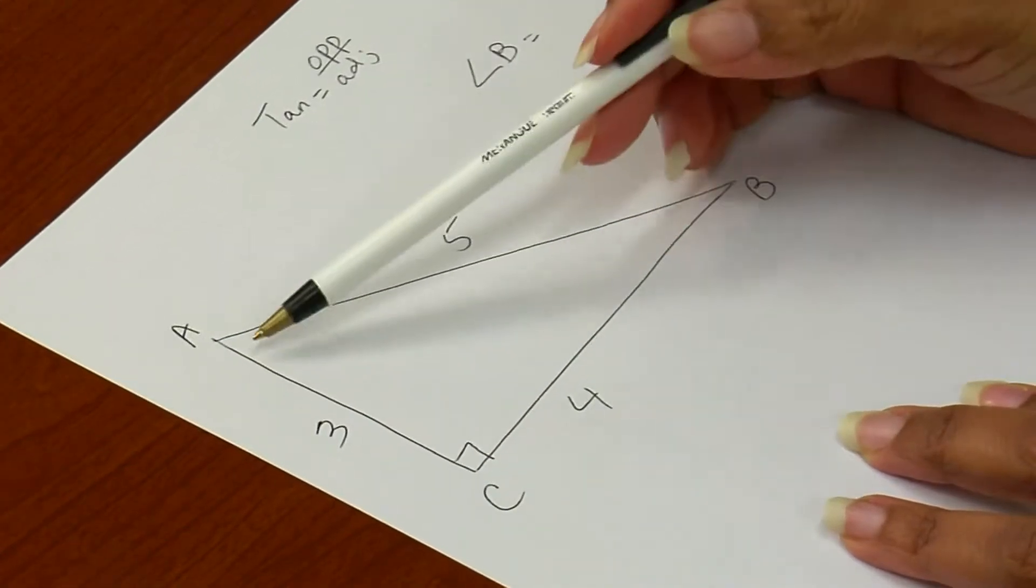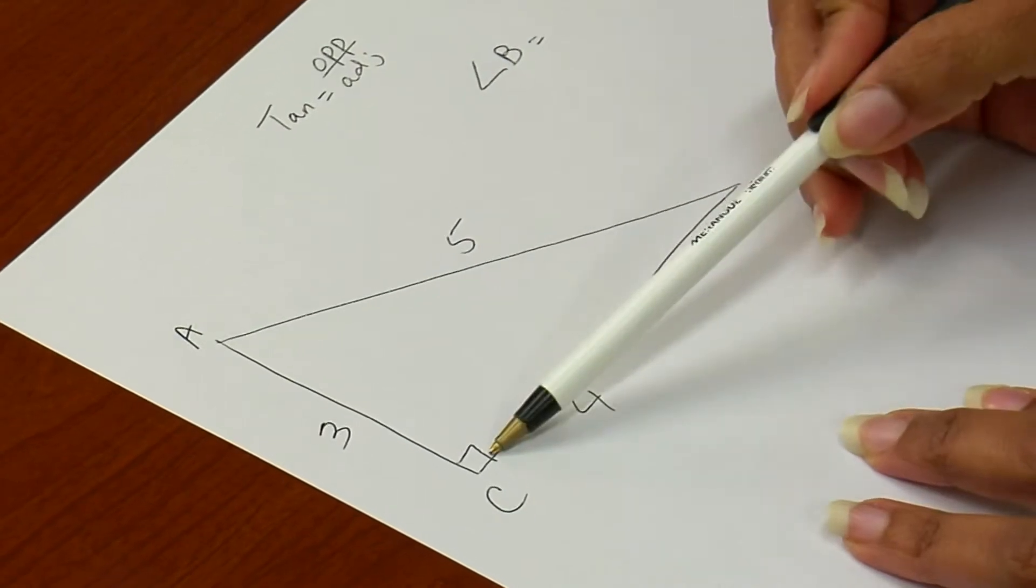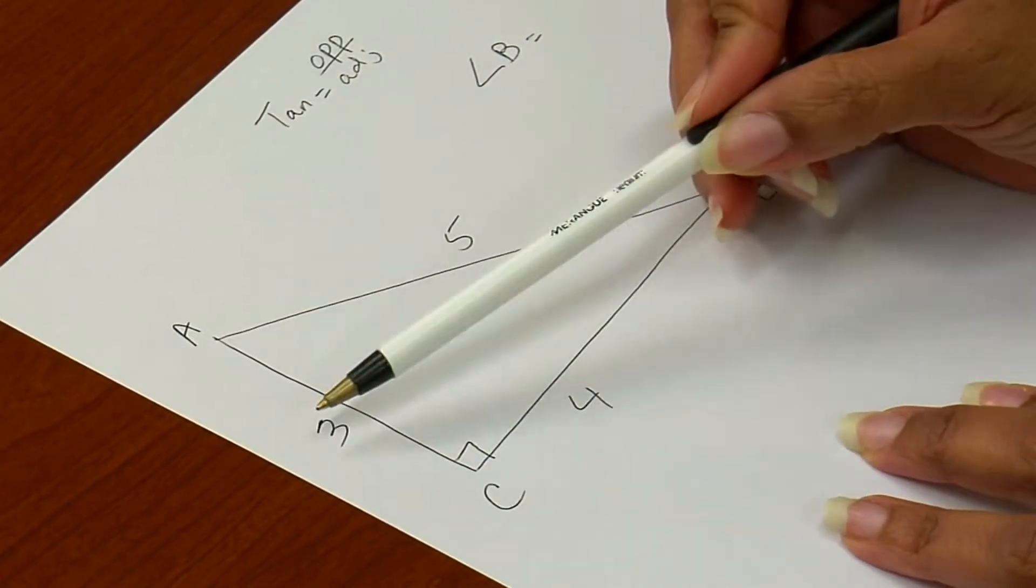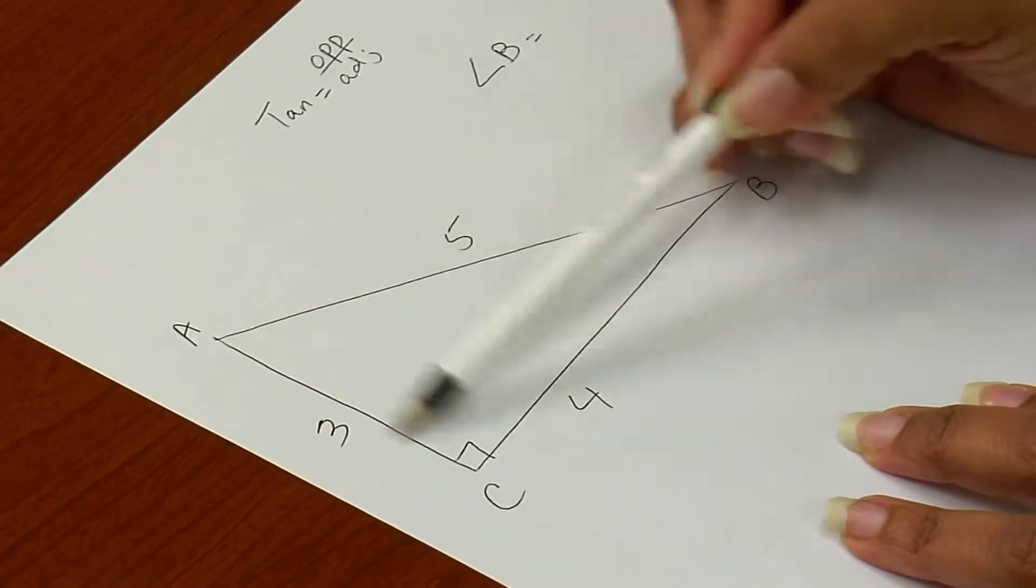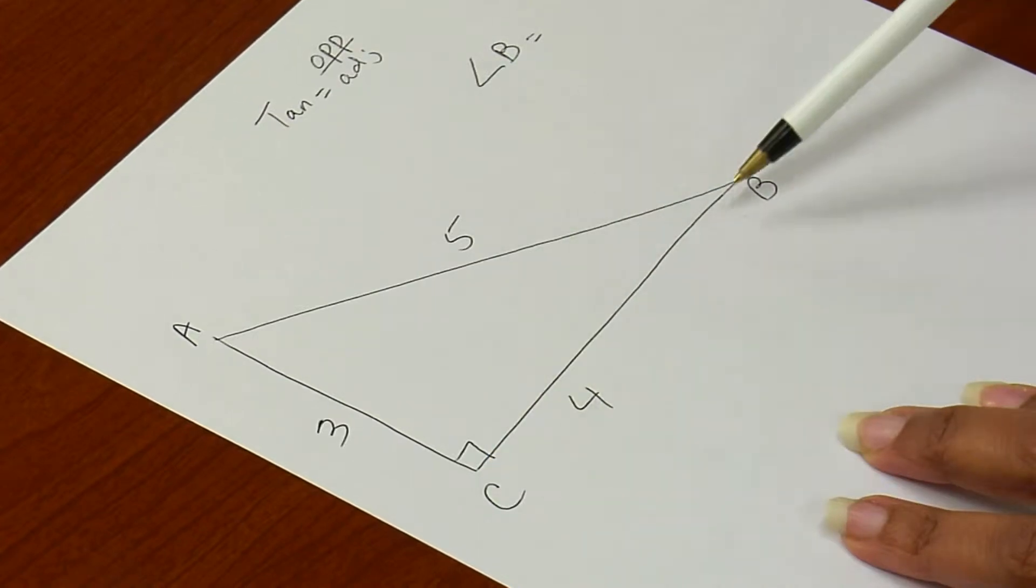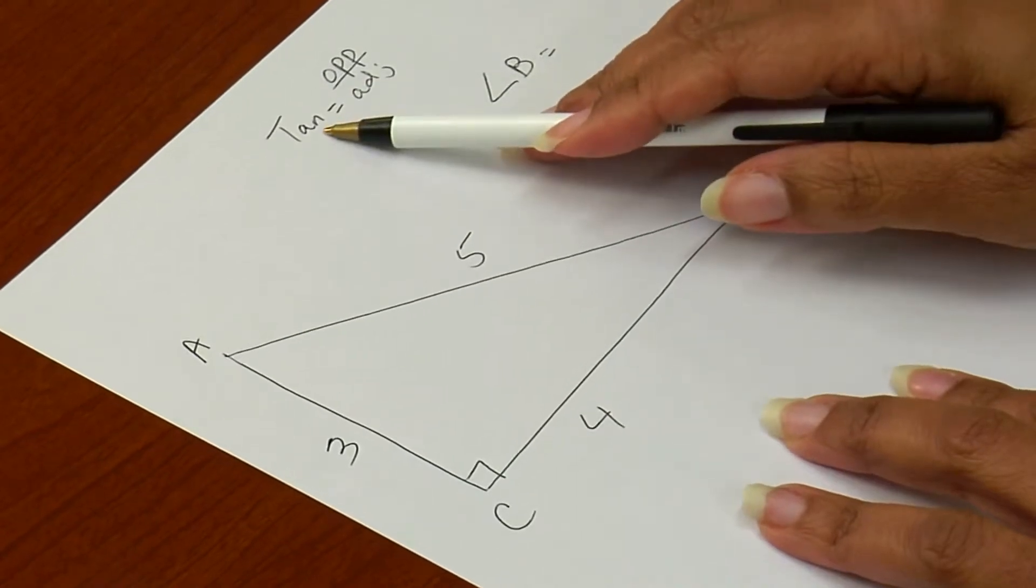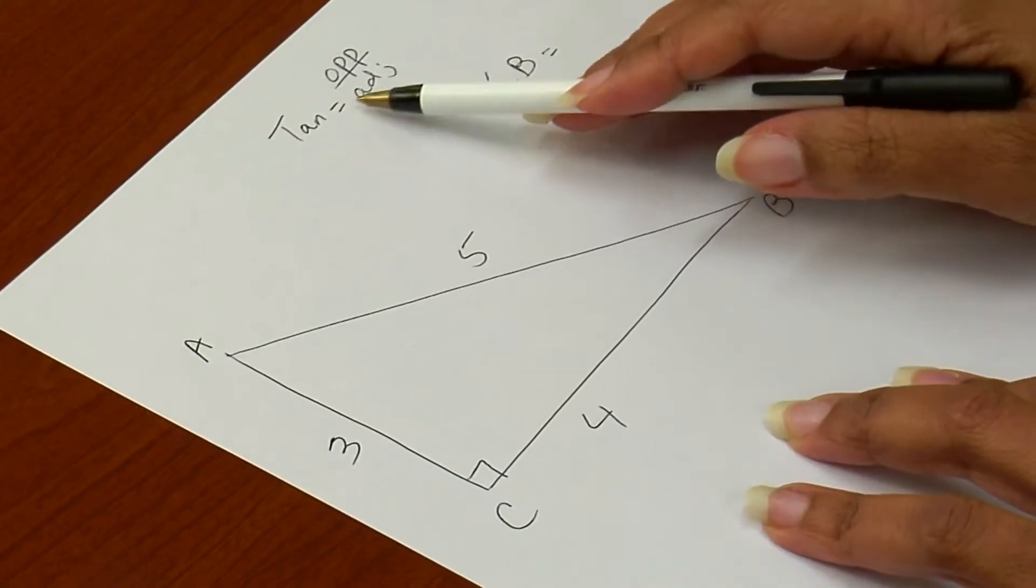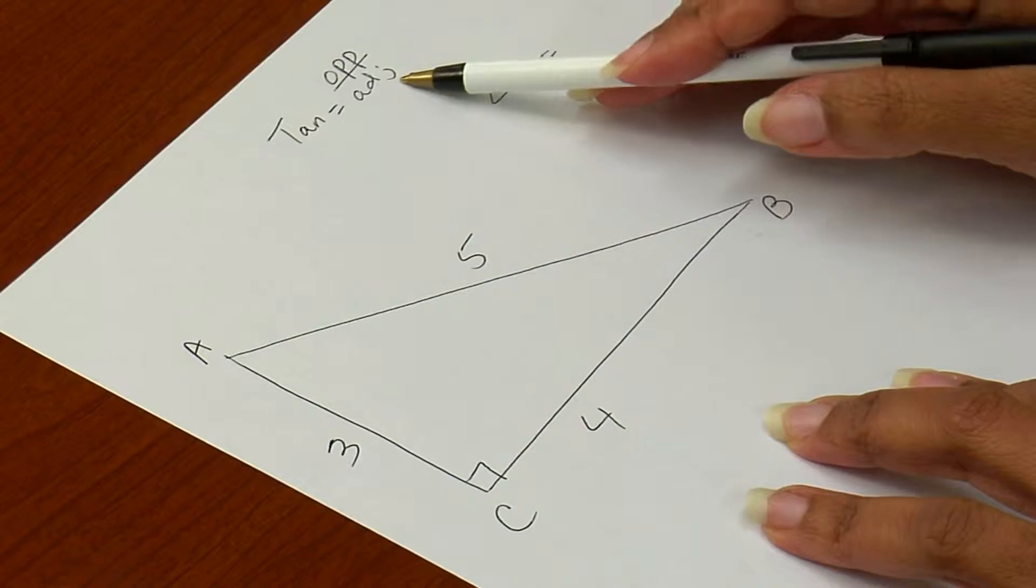Here's our right triangle, and here we call the two legs, the two sides that make up the 90 degree angle, 3 and 4. Side A, that's one leg, and the other leg is side B, C. So we only use those two for tangent. Tangent is opposite leg over the adjacent leg.